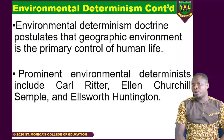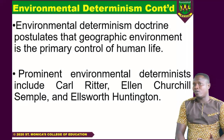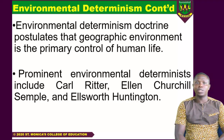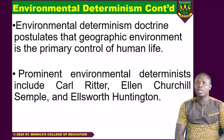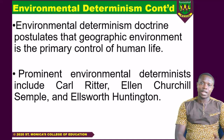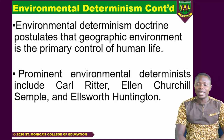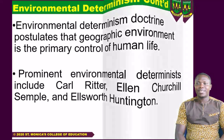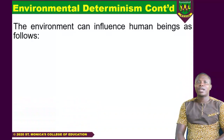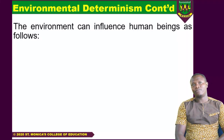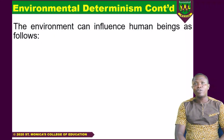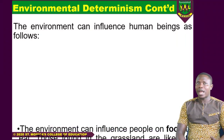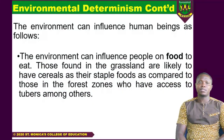Proponents of environmental determinism include Carl Ritter, Ellen Churchill Semple, and Ellsworth Huntington, among several others. All these people believe that the environment has some kind of influence on your life, and they believe that the environment can influence your life in the following ways.